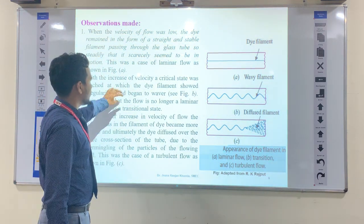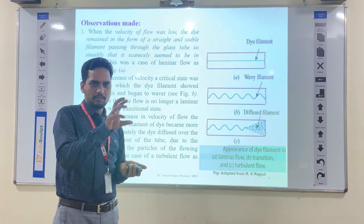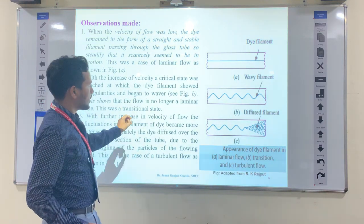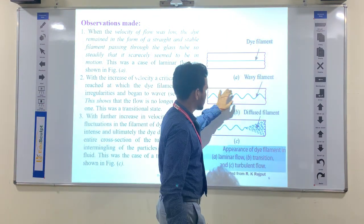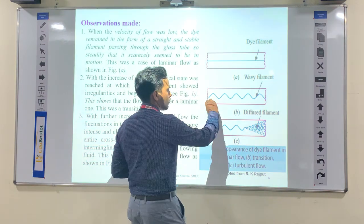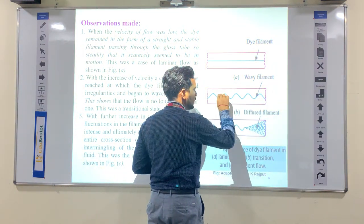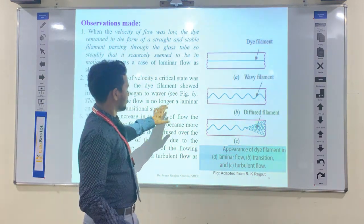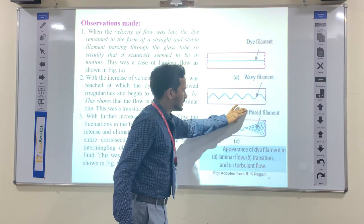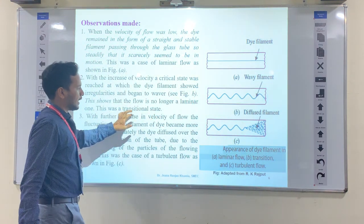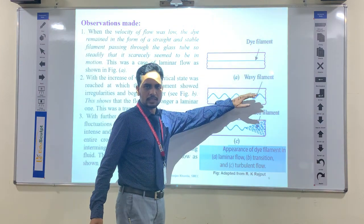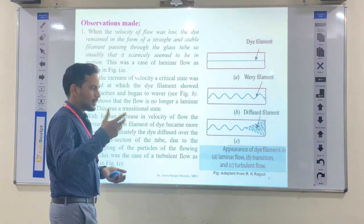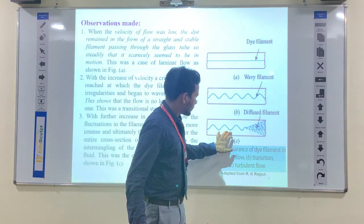But when the velocity increases — as the regulating valve is opened more — then some wave formations appear. The dye filament starts deviating from its path. That form is known as transition, or transitional flow.